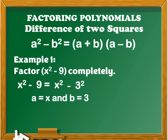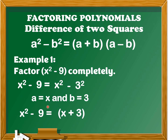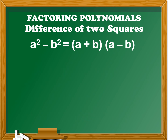Next, we're going to determine the value of a and b. In the polynomial x squared minus 3 squared, the value of a is x and the value of b is 3. After finding the values of a and b, we substitute them: x squared minus 9 is equal to x plus 3 times x minus 3. So a plus b is x plus 3, and a minus b is x minus 3. Therefore, the factors of x squared minus 9 is equal to the quantity of x plus 3 times the quantity of x minus 3.